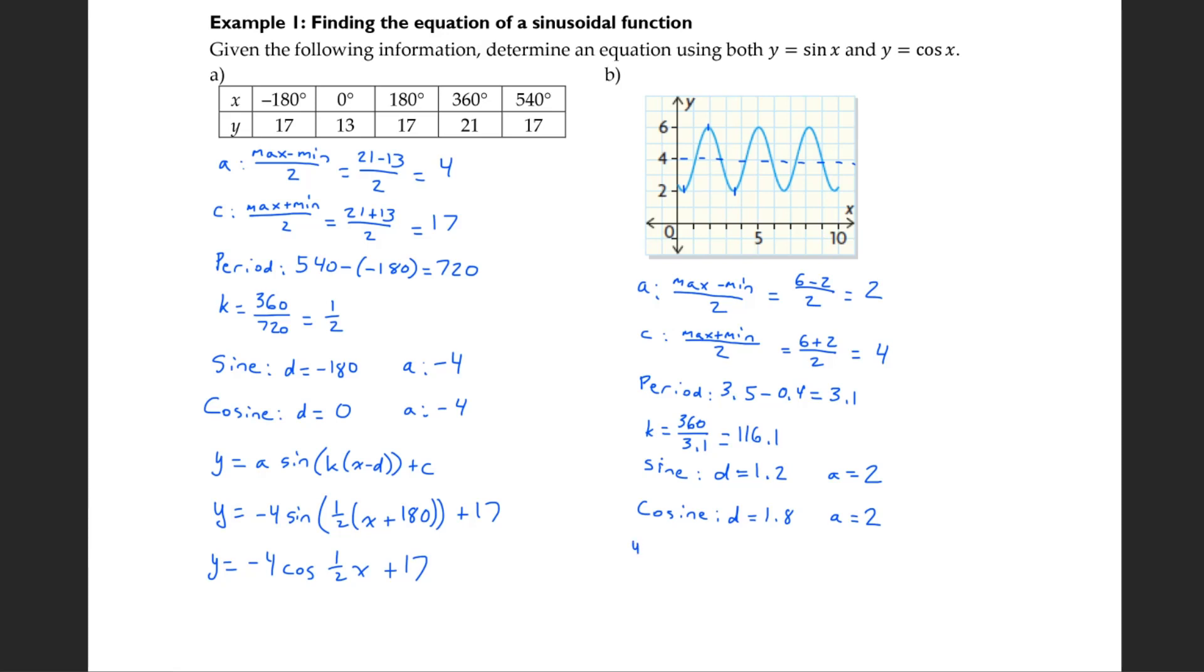And now our equations. Y equals 2 sine bracket 116.1 bracket x minus 1.2 bracket bracket plus 4. For cosine, y equals 2 cos 116.1 x minus 1.8 bracket bracket plus 4.